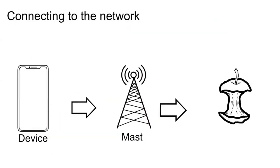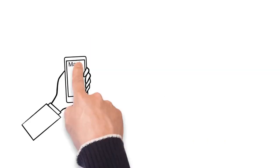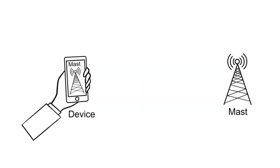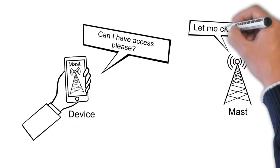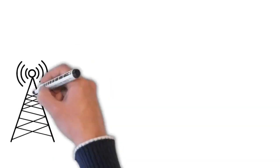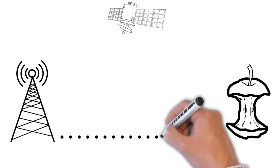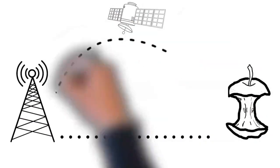5G connects us in similar ways to previous networks. When a device turns on or moves location, the device sends a request to a mast via radio to ask for access to the network. The mast then passes on the request to the core network through fiber optics, cable, or satellite.